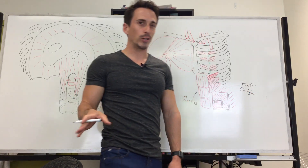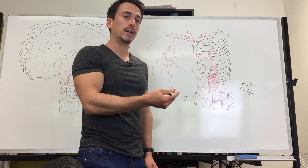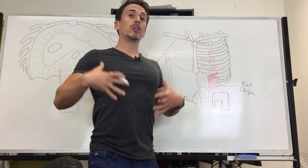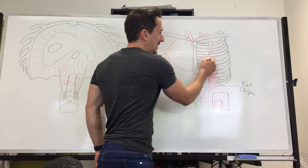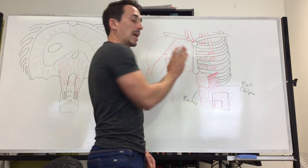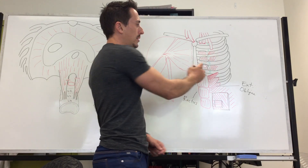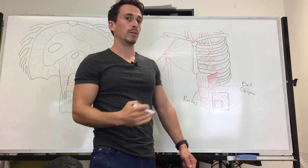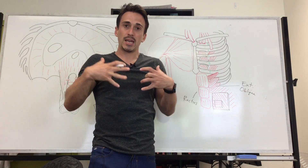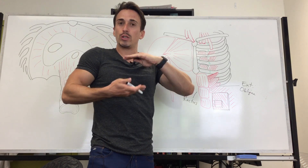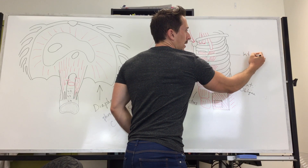The external intercostals, which lift the rib below them increasing the thoracic cavity, are involved in inspiration. The internal intercostals, which are deeper to the external intercostals, have fibers running in the opposite direction. When they contract, they push the rib down and in, reducing thoracic volume. So these are the internal intercostals, involved in expiration.